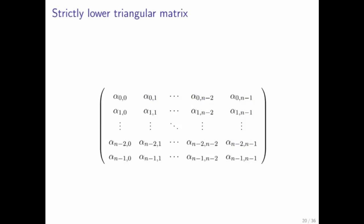A strictly lower triangular matrix has zeros on the diagonal, zeros above the diagonal, and no restrictions on what's below the diagonal.